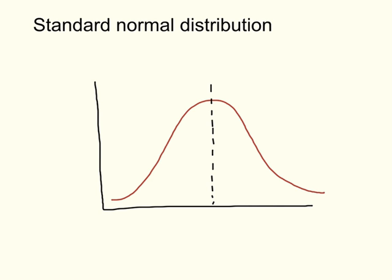This video will explain what a z-score is. We know that the normal distribution looks like a bell curve, and that the center of the distribution is the mean, the mode, and the median. 50% of the scores are going to be on the left, lower than the mean, mode, and median, and 50% of the scores are going to be on the right. These things are true of all normally distributed data.